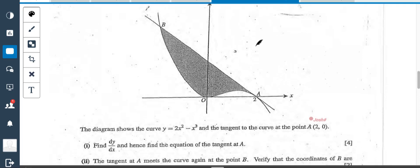So we're given this graph here, and we have the shaded area, and we have a tangent running from A to B. The first question says, find dy by dx, and hence find the equation of the tangent at A. Okay, so we're going to use differentiation for this one.